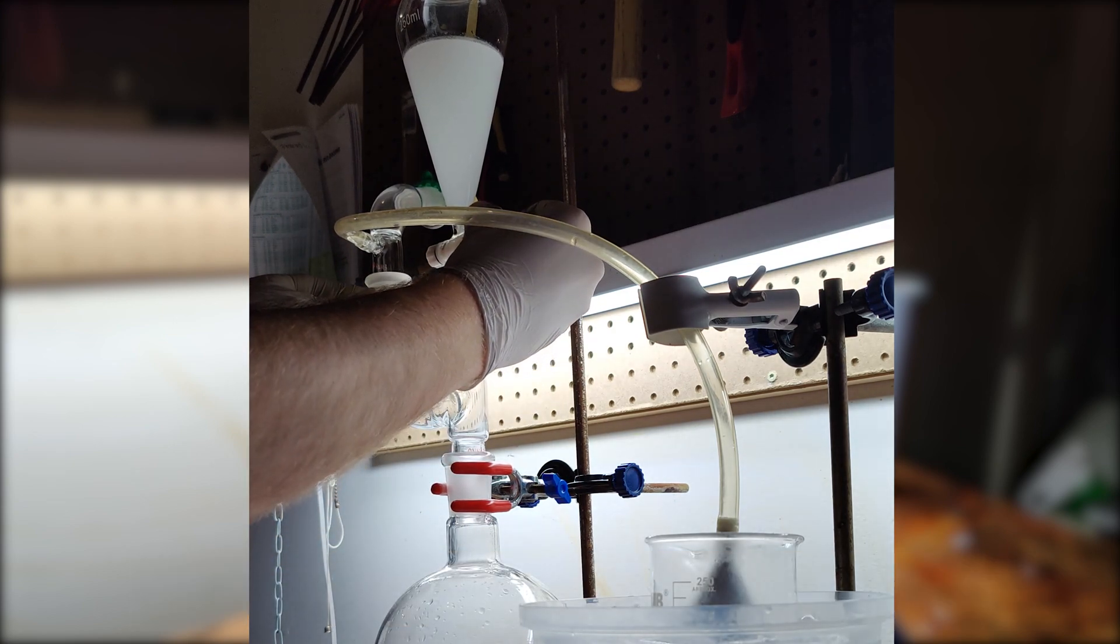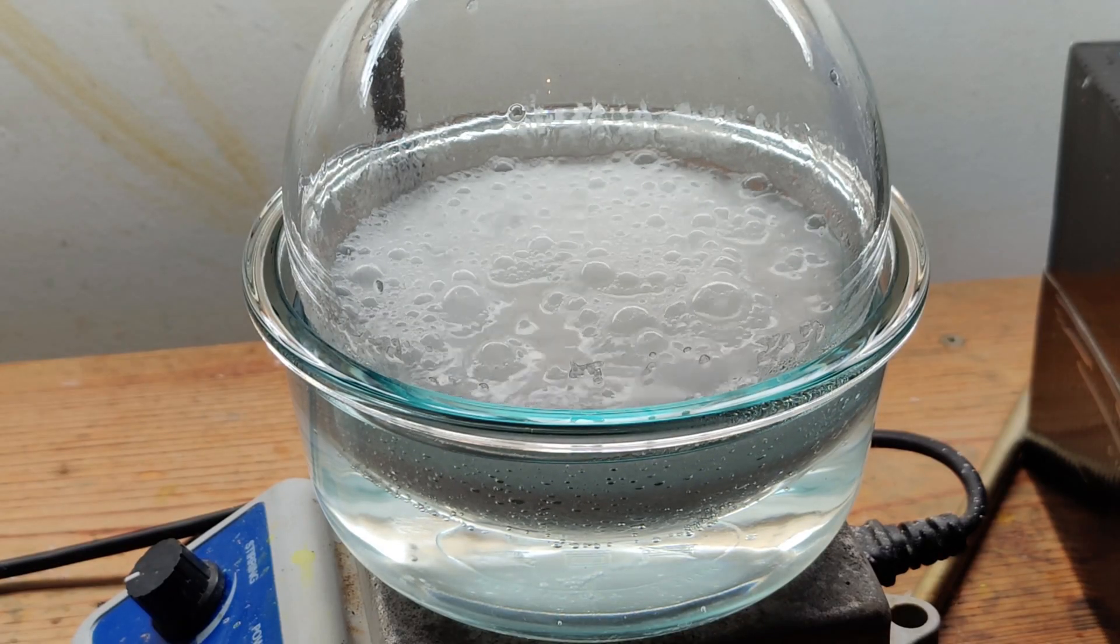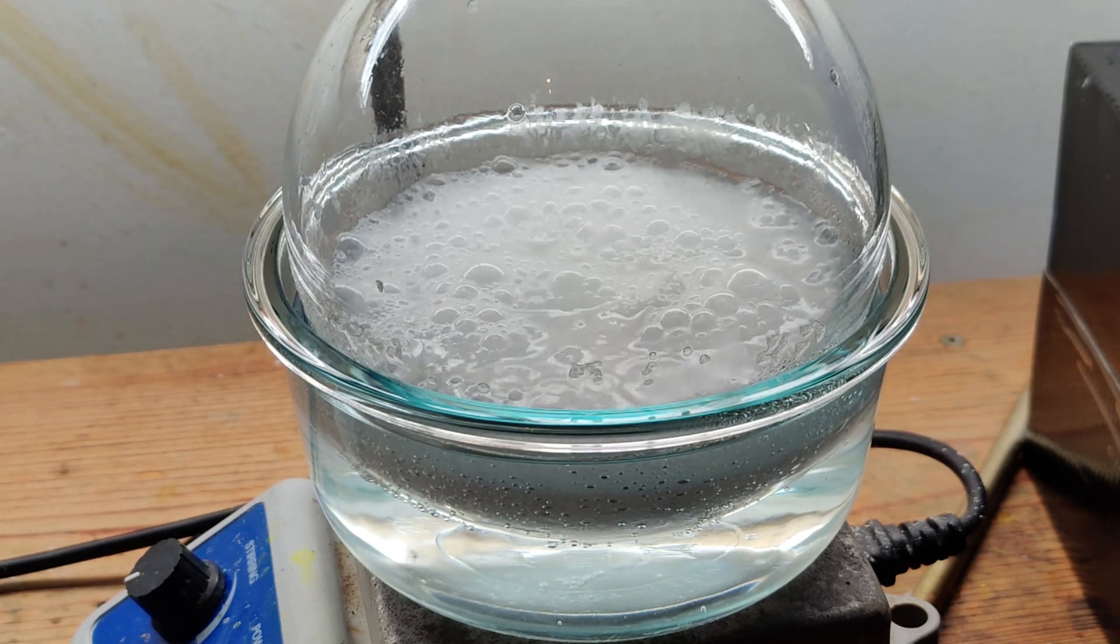Once I've added all the NaOH, and the reaction appears to be slowing down, I place the flask into a hot water bath and bring it to near boiling. This will help drive out as much of the ammonia gas as possible.